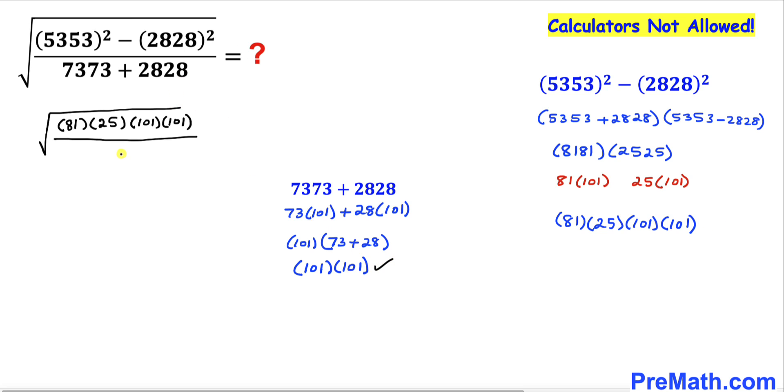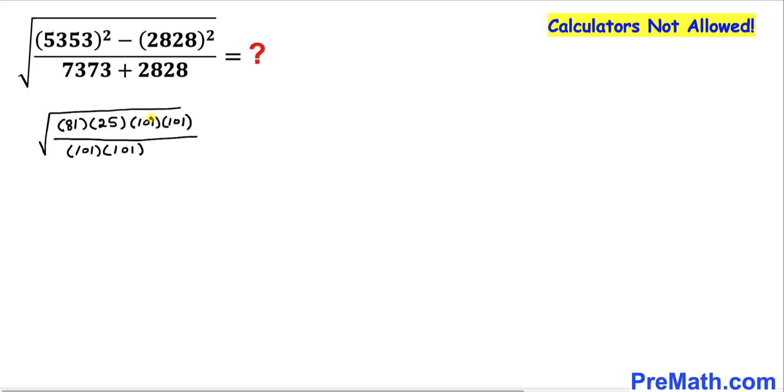Now we can see this 101 and 101 is gone, and this 101 and this 101 is gone as well. So we end up with 81 times 25 under the square root.